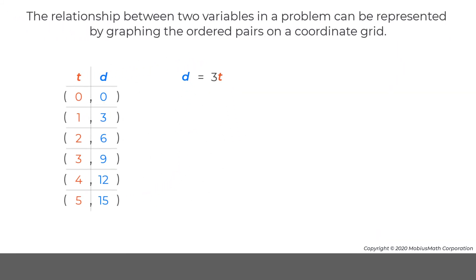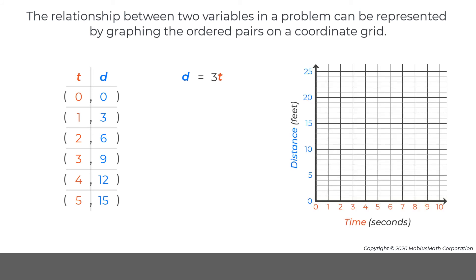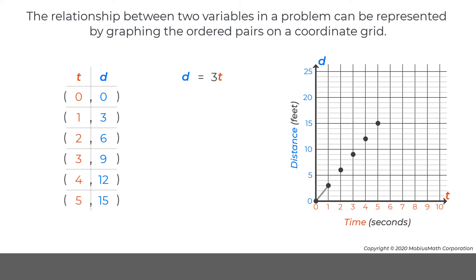The relationship between two variables in a problem can also be represented by graphing the ordered pairs on the coordinate grid. On the coordinate grid, the independent variable is represented on the horizontal axis, and the dependent variable is represented on the vertical axis. Next, ordered pairs from the table can be plotted. For this problem, a line can be drawn connecting these points, because every point on the line represents an ordered pair of the remote-controlled car traveling at a speed of 3 feet per second.